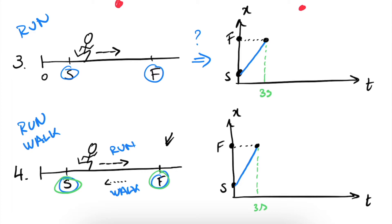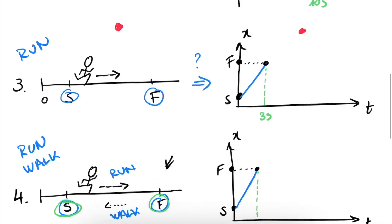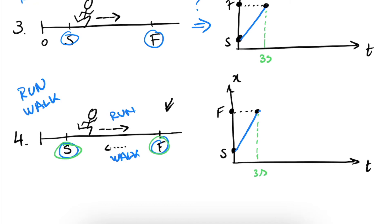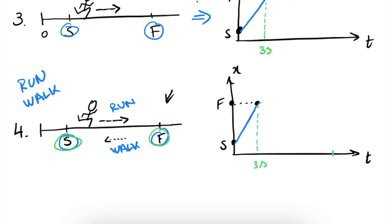And now we walk back from F to S. So we start here and we walk back to S. So how does this look now on our graph? Well, we know that if we walk, our slope will be much less steep. Now what it means is that this will occur. So let's say that we do this distance in 10 seconds as we did here. That means that at T equals 13, we will arrive again at our initial position S.